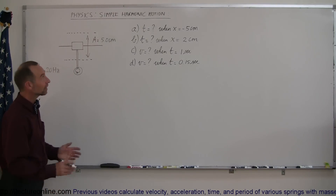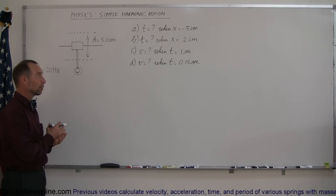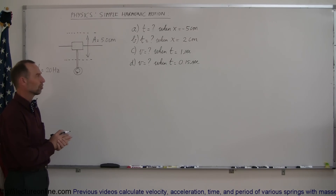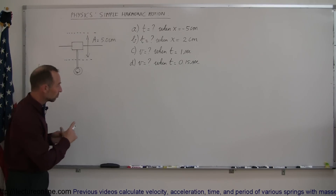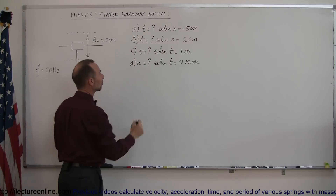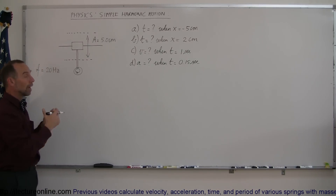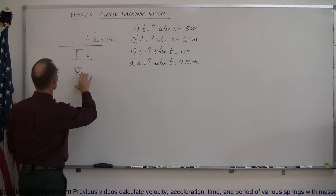Welcome to Electron Online. Here's a different kind of example of how to deal with simple harmonic motion. In previous examples, we looked at it in terms of energy, velocity as a function of position, and acceleration as a function of position. Here we're going to look at it in terms of time and velocity — finding velocity and acceleration as a function of time, and figuring out how long it takes for an object in oscillatory motion to reach a certain position. Let's start by explaining this first.